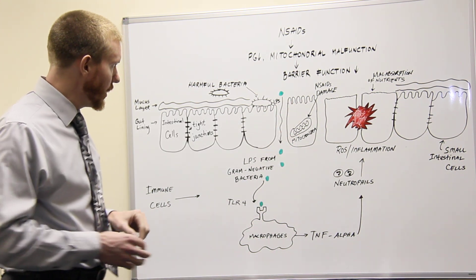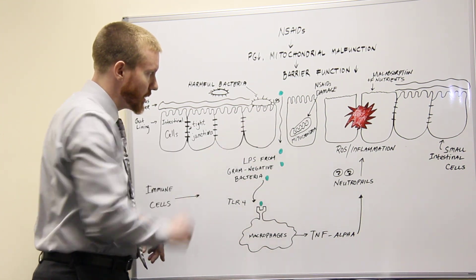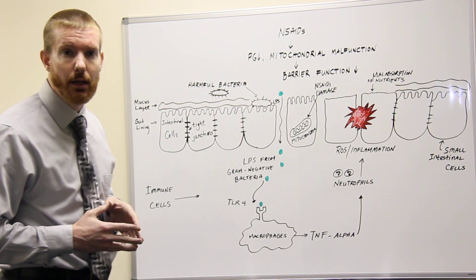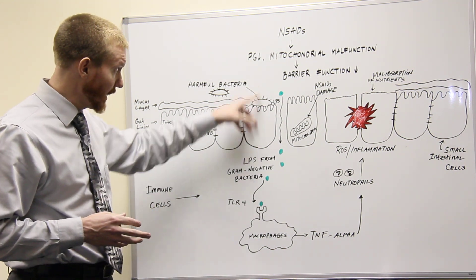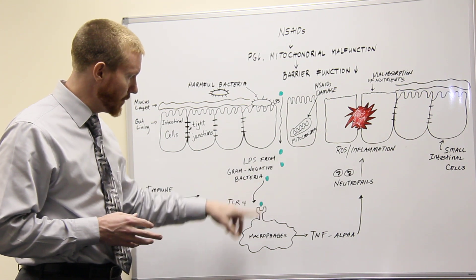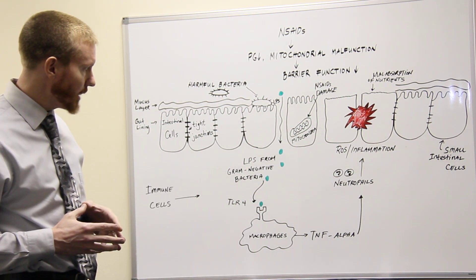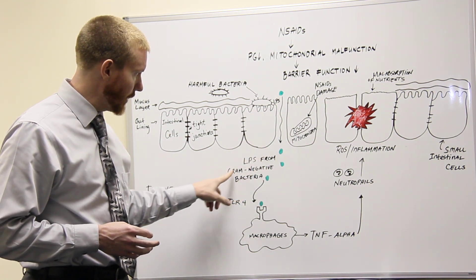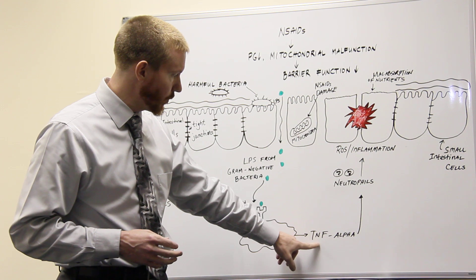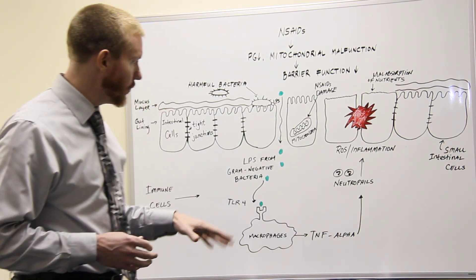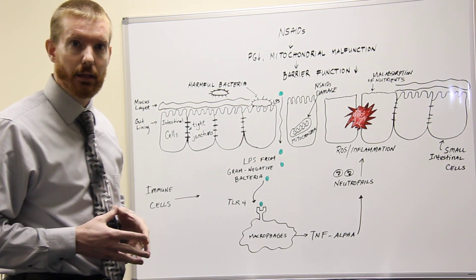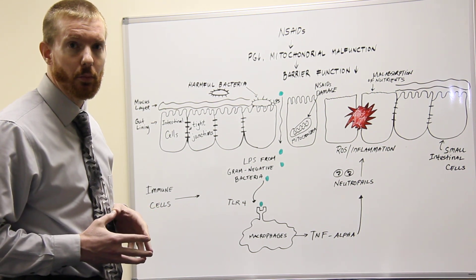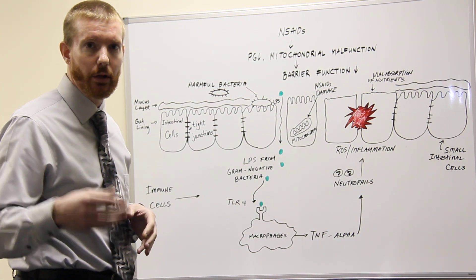Now toxins such as LPS — lipopolysaccharide, secreted from gram-negative bacteria — can get through the intestinal cells and stimulate cells of the immune system. The cells of the immune system, because they are stimulated from LPS from gram-negative bacteria, will increase their production of TNF-alpha. TNF-alpha is increased in most individuals with ankylosing spondylitis and other forms of spondyloarthritis, and it is the target of biologic drugs such as Enbrel, Humira, and Remicade.